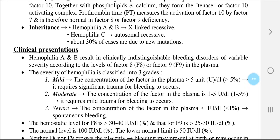Hemophilia A and B result in a clinically indistinguishable bleeding disorder of variable severity according to the level of factor 8 or factor 9 in the plasma. The severity is classified into three grades. First, mild — where the concentration of the factor in the plasma is more than 5 units per deciliter (more than 5%); significant trauma is required for bleeding to occur.